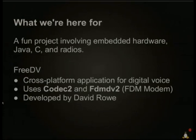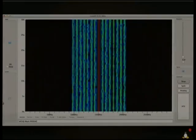Today we're here to talk about a fun project involving embedded hardware, Java, C, and radios. FreeDV is a cross-platform application for doing digital voice transmissions. It uses two major software components: Codec 2, a low bit rate digital voice codec, and FDM-DV2, a modem for transmitting that codec over HF radio channels. It was developed by David Rowe. Here you can see a waterfall of the different modem carriers transmitting the codec over the air.